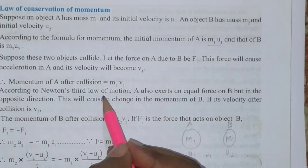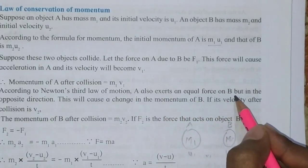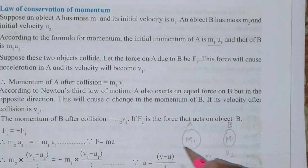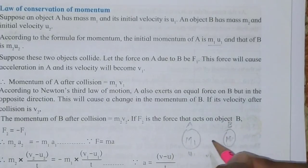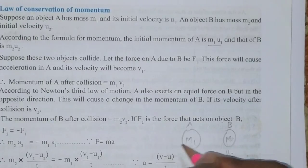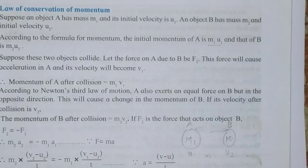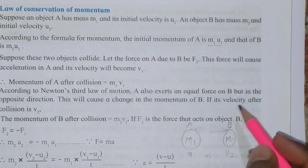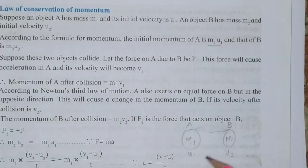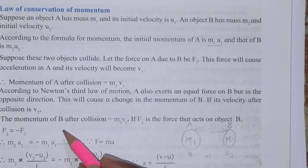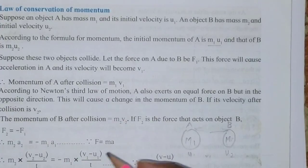According to Newton's third law of motion, A also exerts an equal force on B but in the opposite direction. When both balls collide, one ball exerts a force on the other, and ball B goes in the opposite direction after collision, while ball A goes in the opposite direction due to B's collision. This causes a change in the momentum of B. If the velocity of B after collision is v2, then for m1 the final velocity is v1 and for m2 the final velocity is v2. So the momentum of B after collision will be m2 into v2.